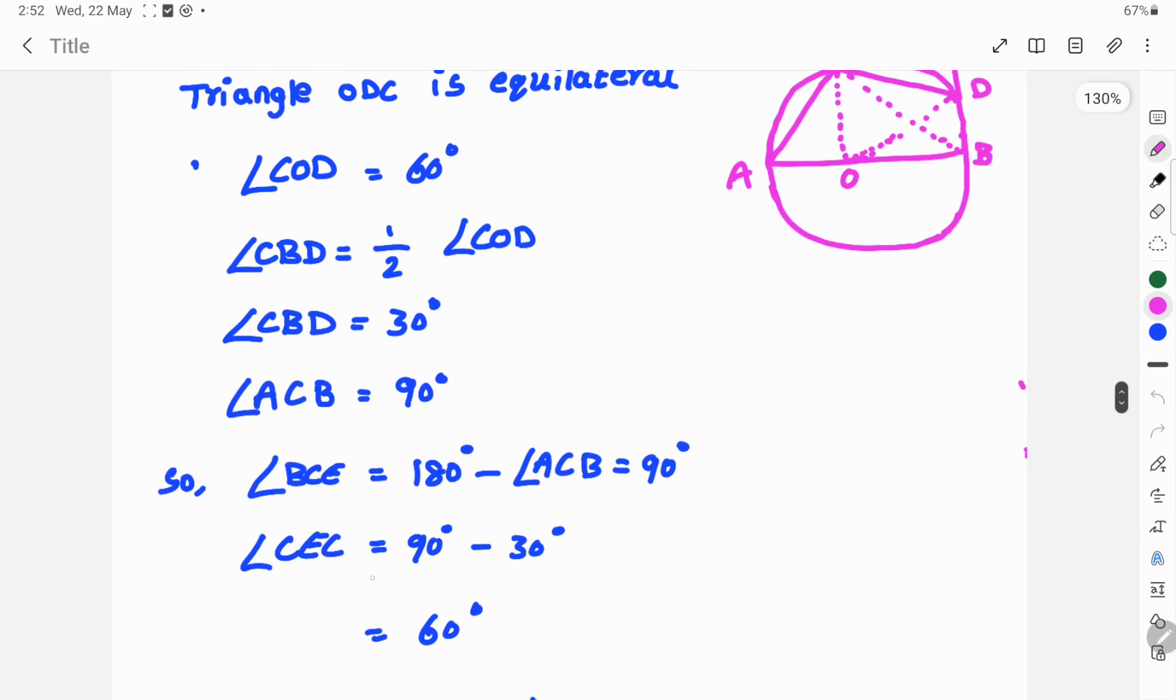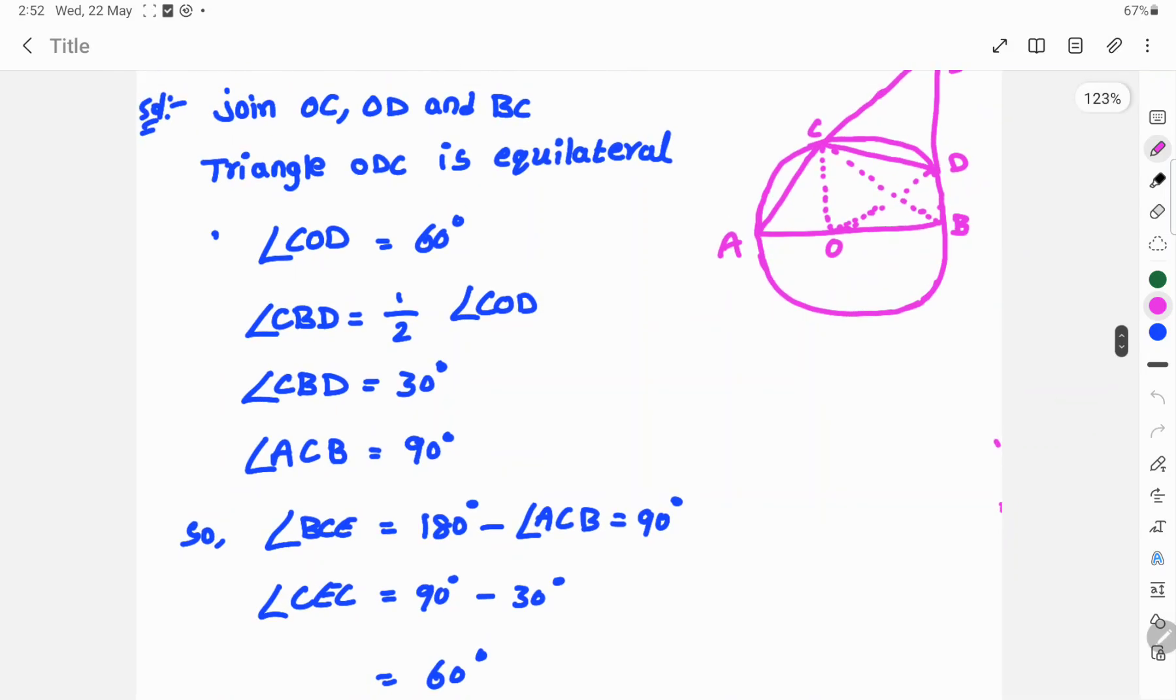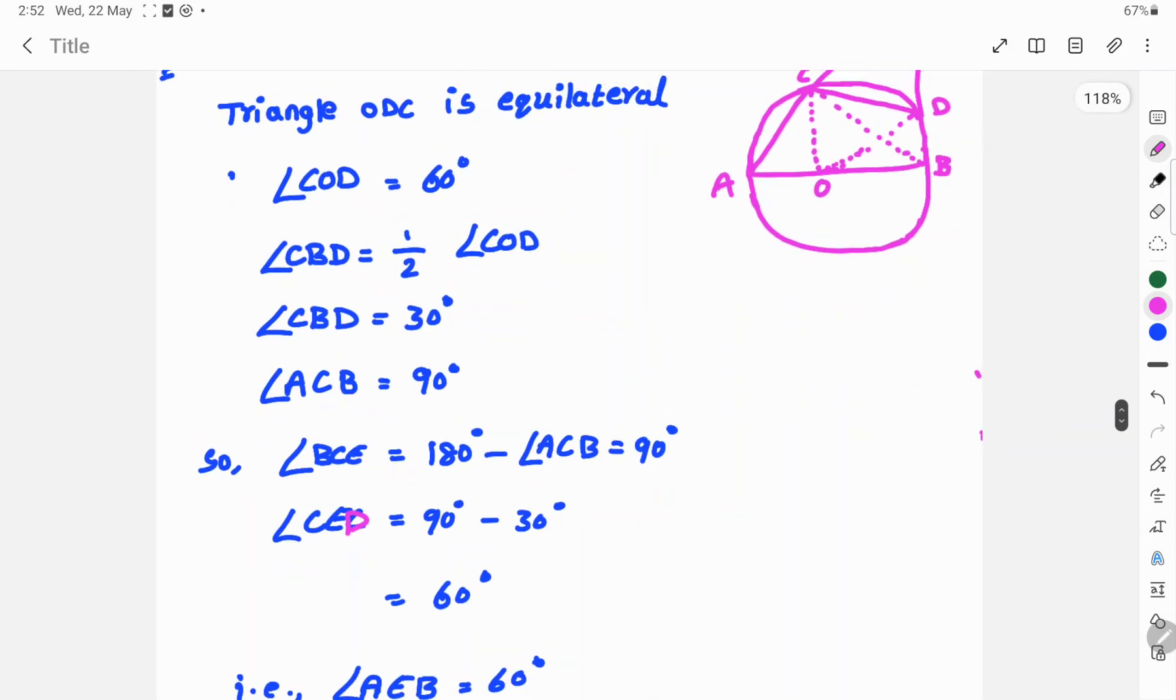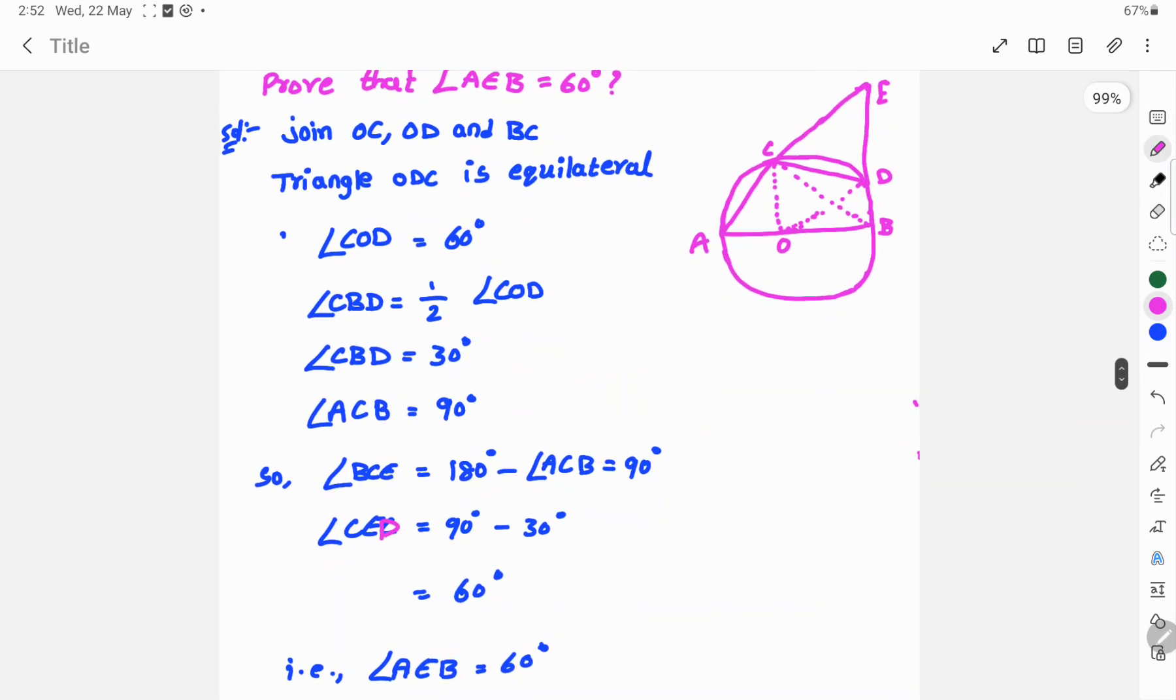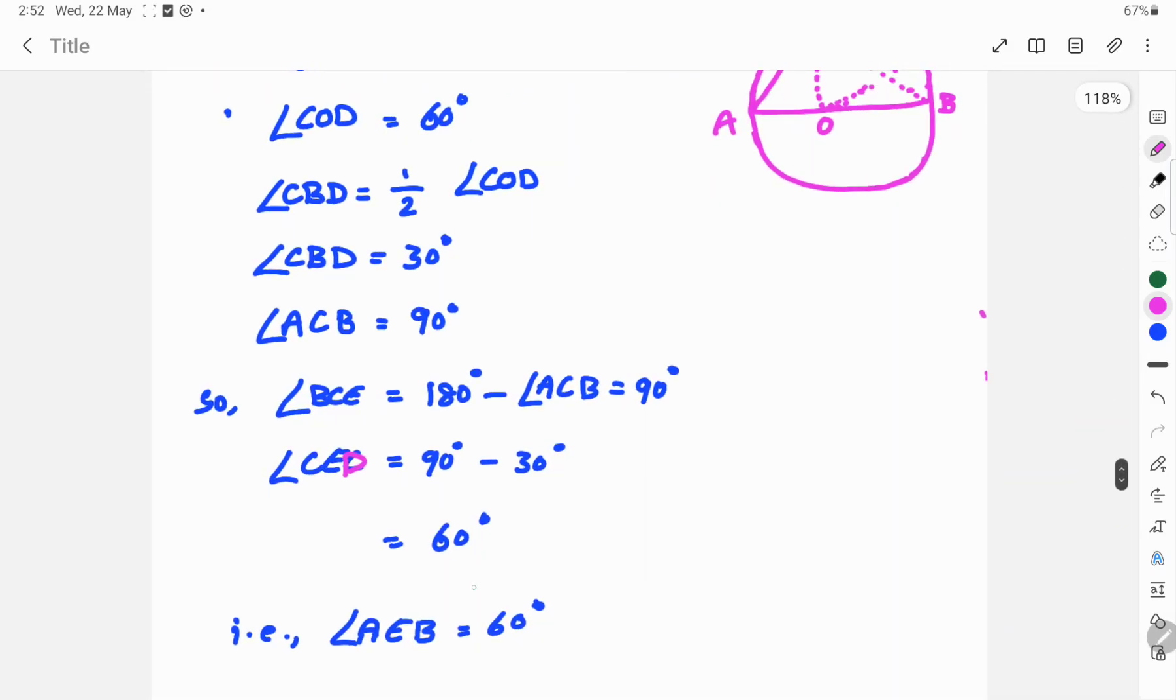Angle CED is equal to 90 degrees minus 30 degrees, which equals 60 degrees. That implies angle AEB is equal to 60 degrees.